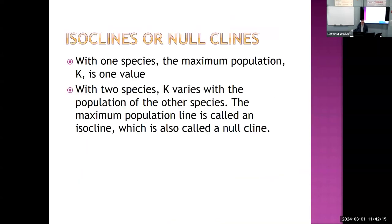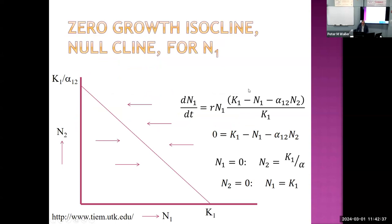Now we'll talk about isoclines or nullclines. This is the nullcline graph for N1, with N1 on the x-axis and N2 on the y-axis. At the nullcline, there is no change in N1. Instead of a stable equilibrium point, we now have a stable equilibrium line. The population of N1 decreases when it's above or to the right of the line, and increases when it's to the left, with no change at the nullcline itself.